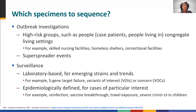Outbreak investigations typically start with an epidemiologically defined group of case patients who share characteristics that increase the risk of transmission. Examples include people living in high-risk congregate living settings and those with shared exposures that represent a potential superspreader event.